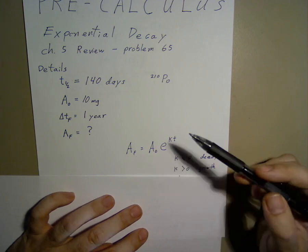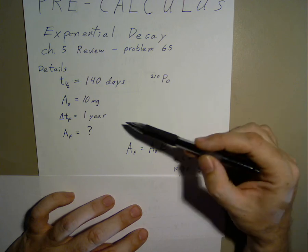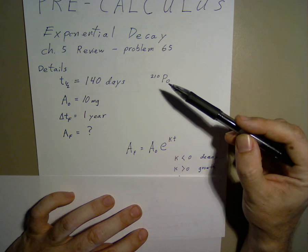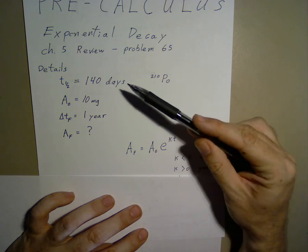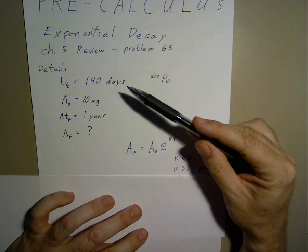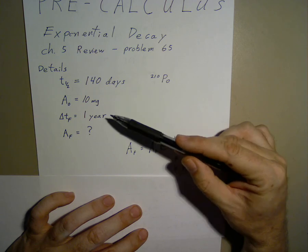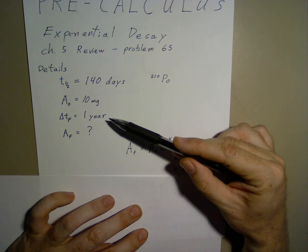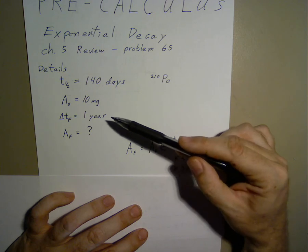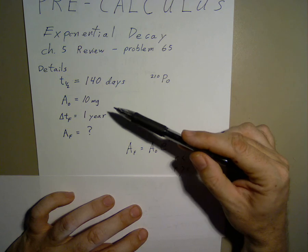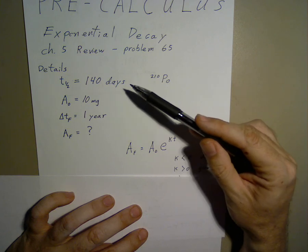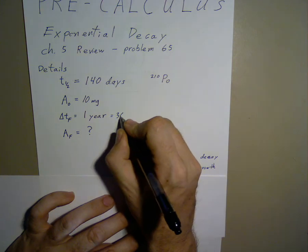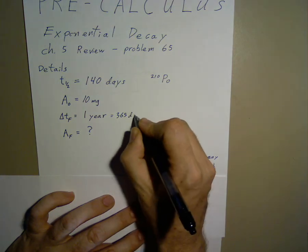In this case, we have 10 milligrams of polonium-210. We know that the half-life is 140 days. We want to find out how much is left over after a year. Now we need to have consistent units, so if we have 140 days for the half-life, for one year we'll need to use 365 days.